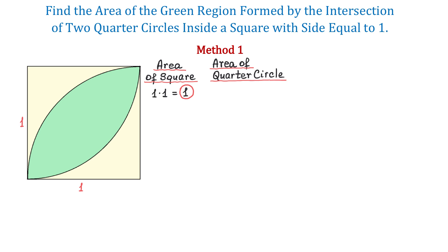The formula for the area of a circle is π r squared, then the area of a quarter circle is 1/4 times π r squared. In this formula, r represents the radius, and we are finding 1/4 of the area of a circle.